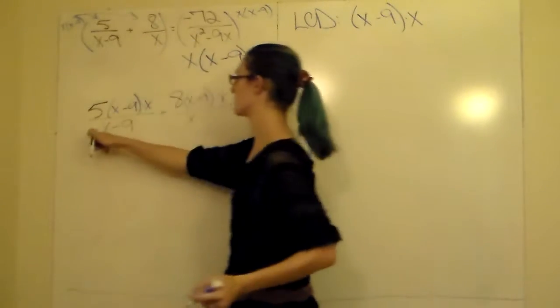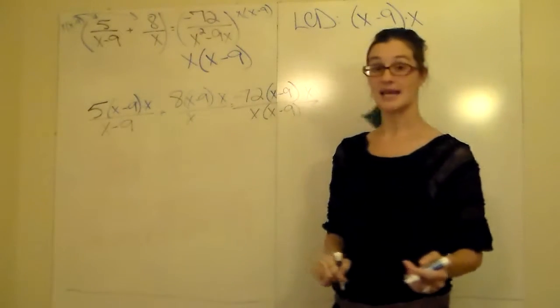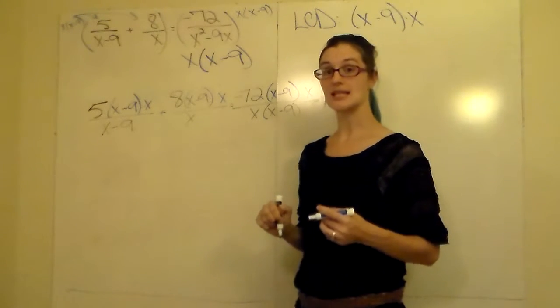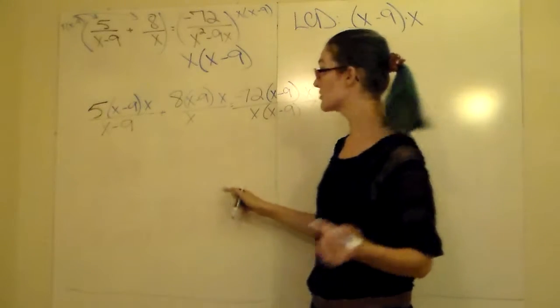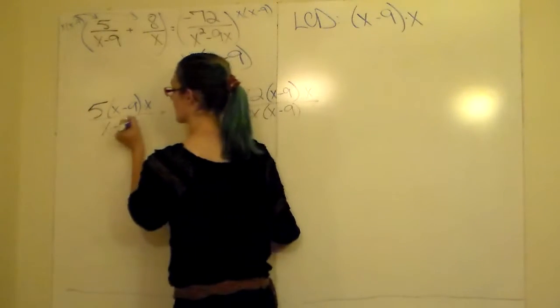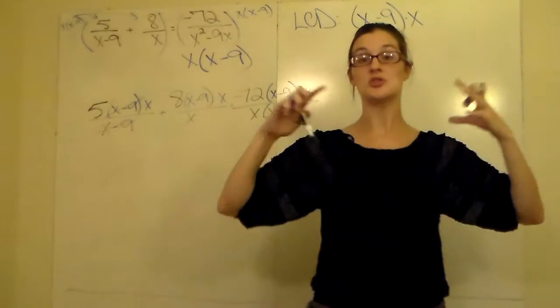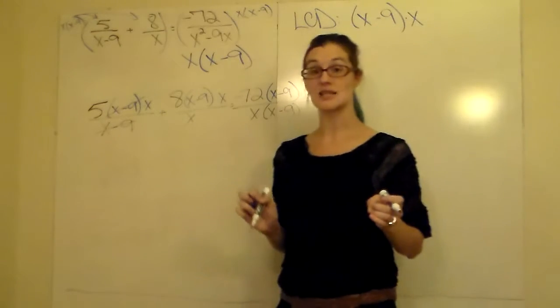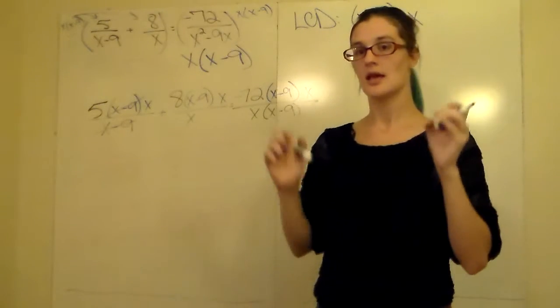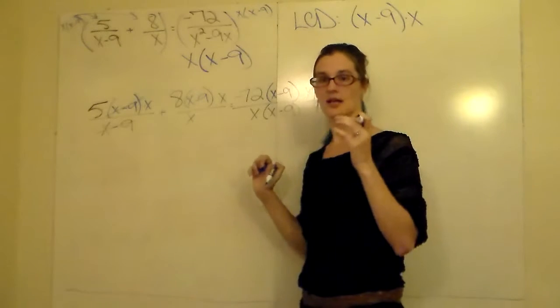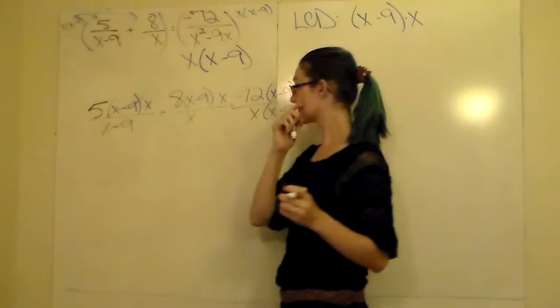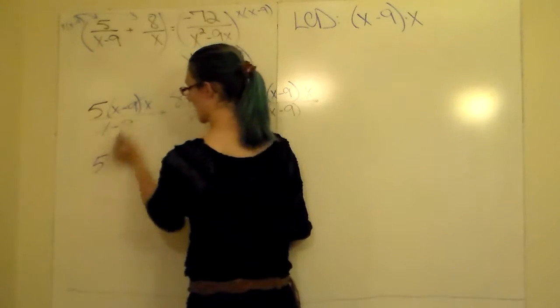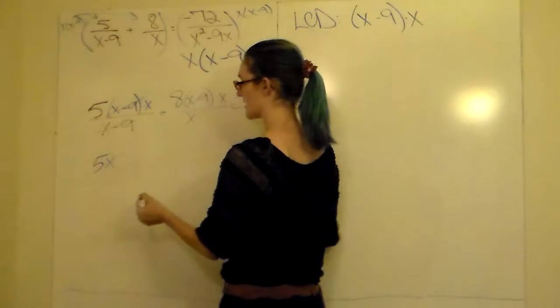Then we're going to reduce. We're going to look at the first fraction: 5 times x minus 9 times x, all divided by x minus 9. Is there anything they can reduce? Anything that's the same on both top and bottom? Would be your x minus 9s. Remember, you can reduce all of a factor or none of a factor. So I could not reduce just the x. I would have to reduce the entire piece, the entire set that is being added or subtracted together. Nothing's left on bottom. My 5 falls and my x falls. They're being multiplied together, so 5x.